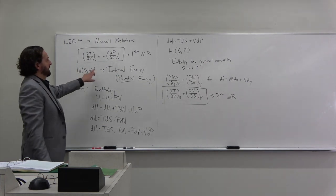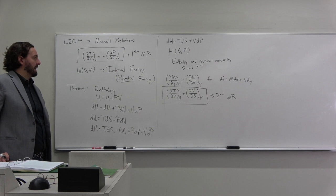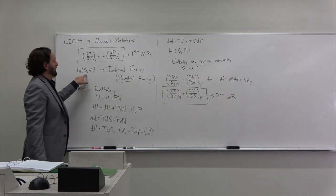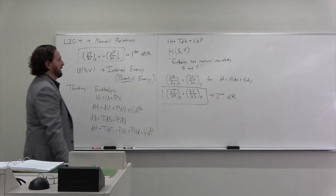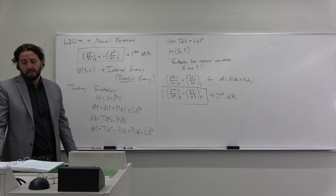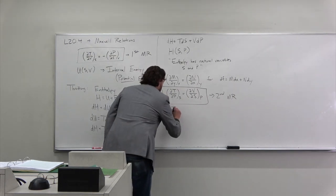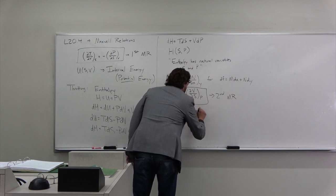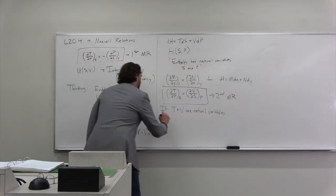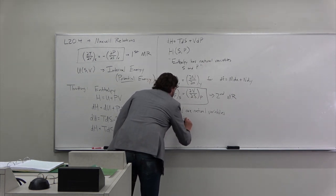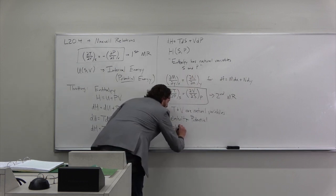So now we have Maxwell relations for natural variables S and V, and S and P. There are also conditions where T is the relevant natural variable instead of S. For T and V as natural variables, the thermodynamic potential is called the Helmholtz potential, written as F equals U minus TS.